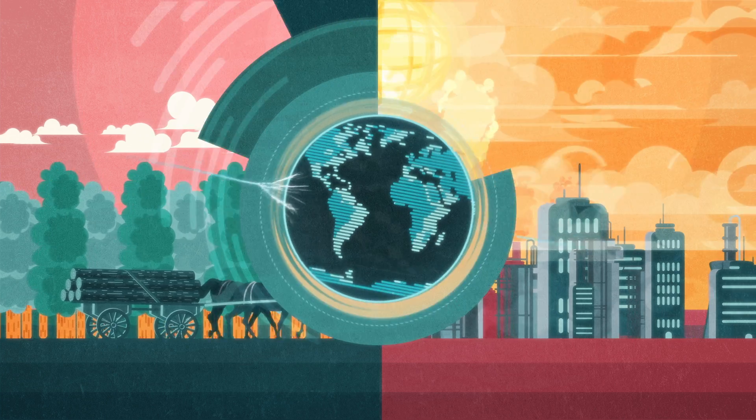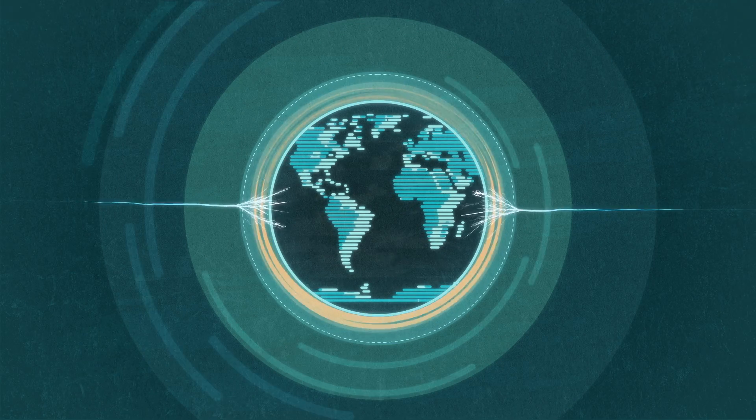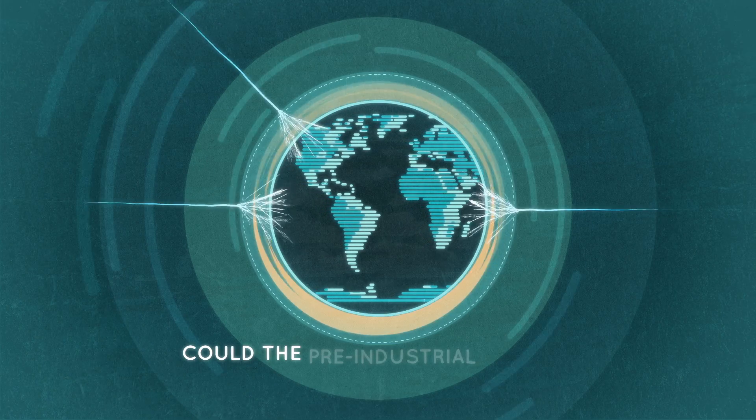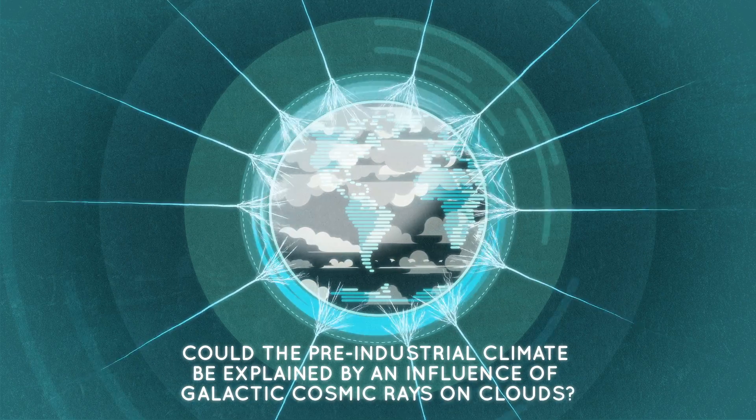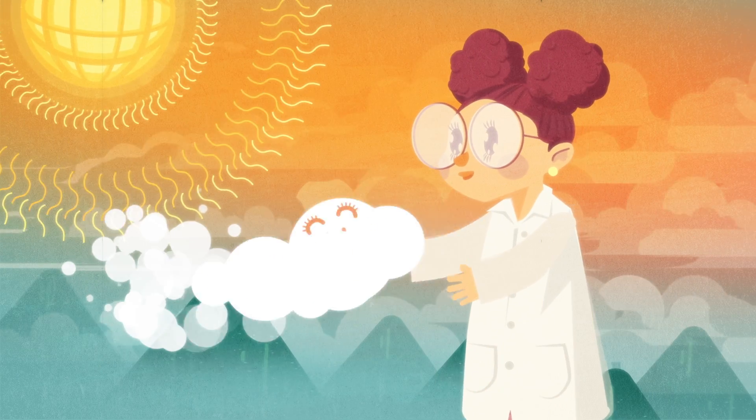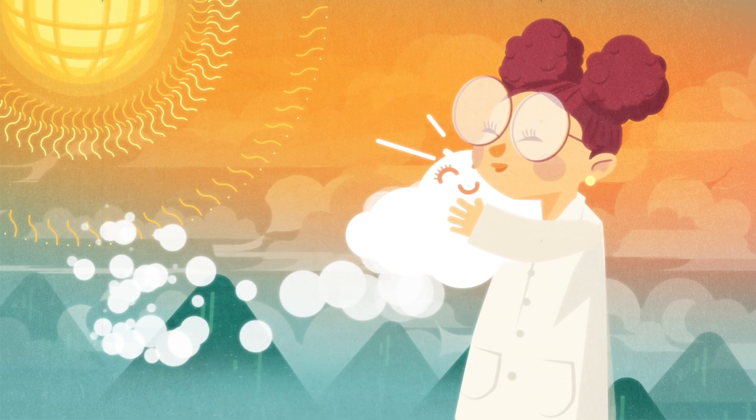And secondly, could the puzzling observations of solar climate variability in the pre-industrial climate be explained by an influence of galactic cosmic rays on clouds? Ambitious but realistic goals when your head's in the clouds.